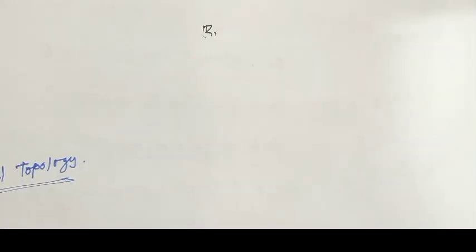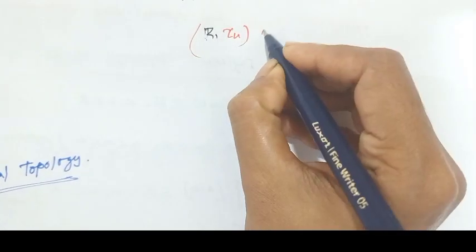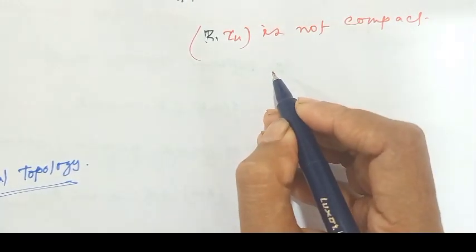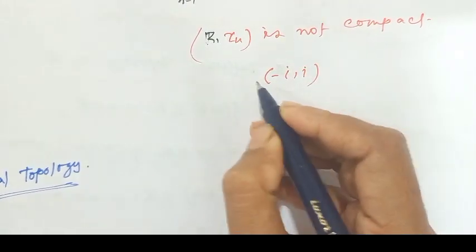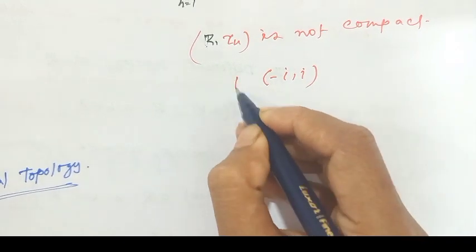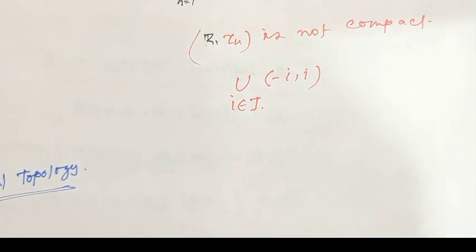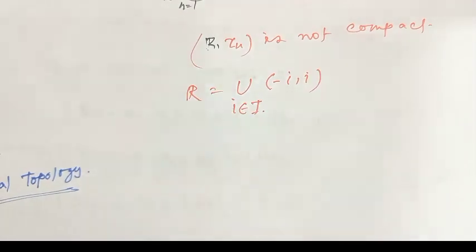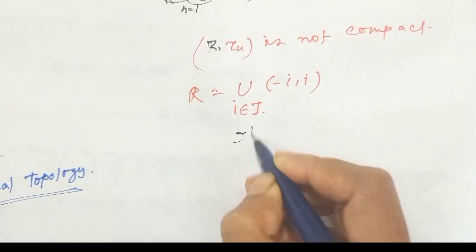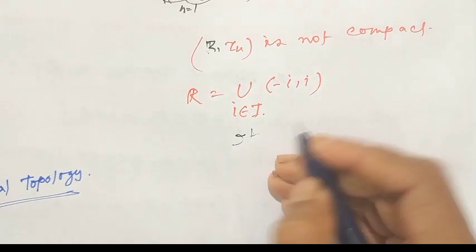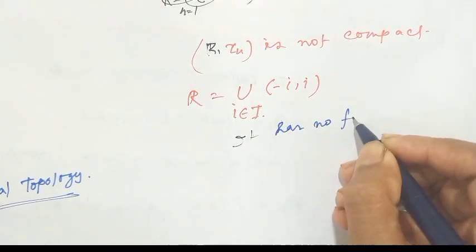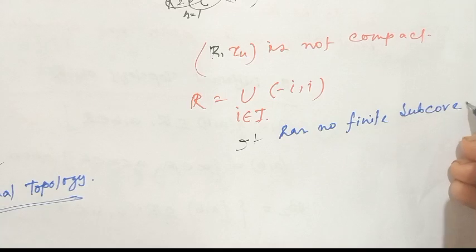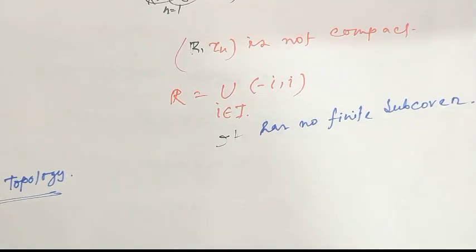For example, consider the open cover of R of the form {(-i, i) : i ∈ I}. This is an open cover of R, but it has no finite subcover. Therefore R with respect to the usual topology is not compact.